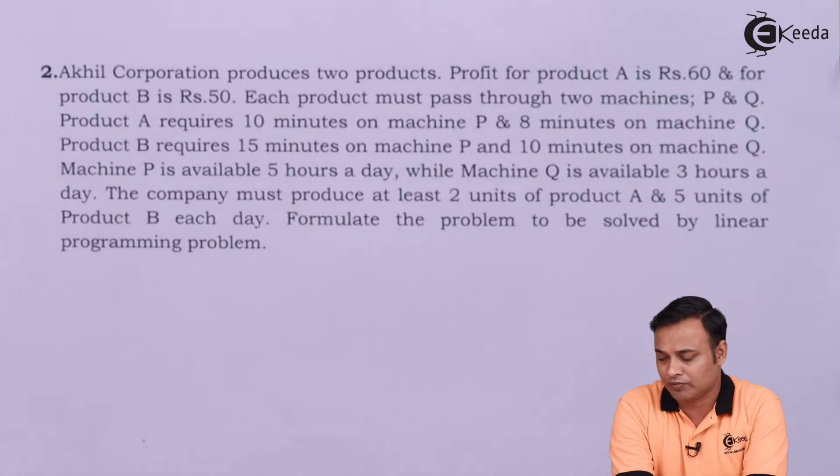Each product must pass through 2 machines P and Q. A requires 10 minutes of machine P and 8 minutes of machine Q. B requires 15 minutes of machine P and 10 minutes of machine Q. Machine P is available 5 hours a day. Machine Q is available 3 hours a day. The company must produce at least 2 units of product A and 5 units of product B each day.